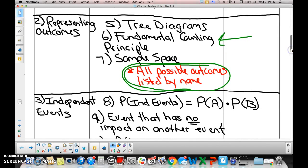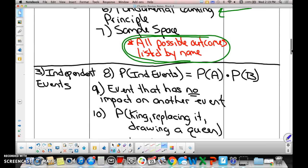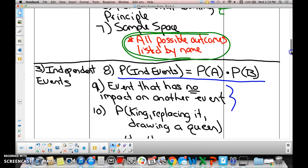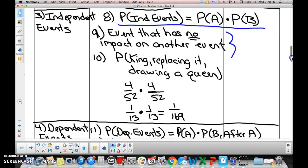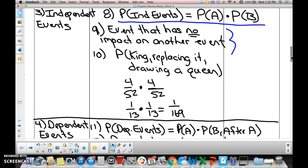Independent events - this formula is huge. If you don't know the probability of independent events, you will not do well on the test. An independent event is an event that has no impact on another event. Number 10 is an example. How many of each type of card are in a deck of cards? For example, how many kings? Four. How many sevens? Four.